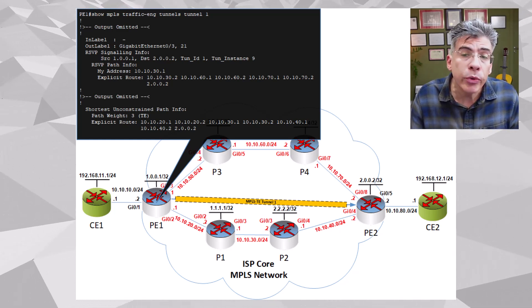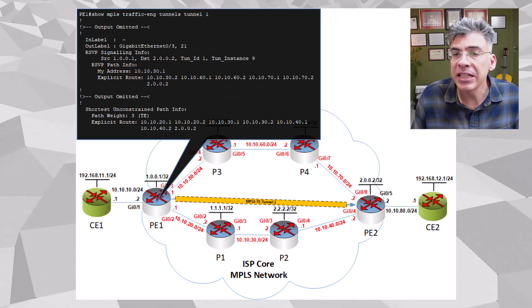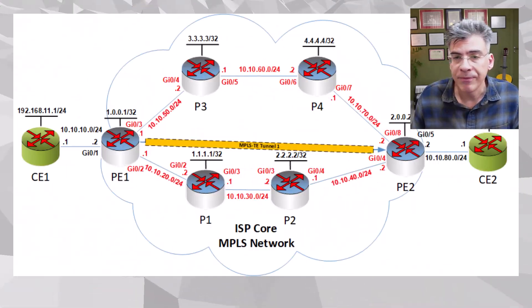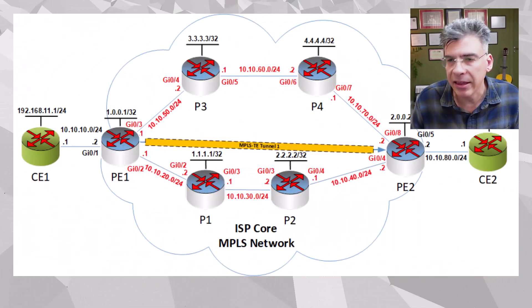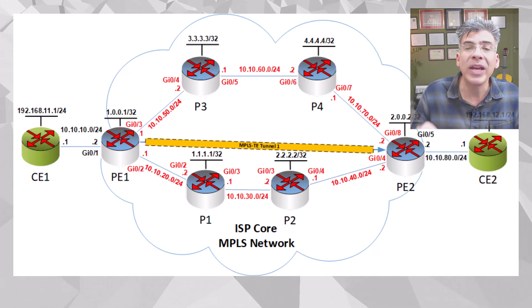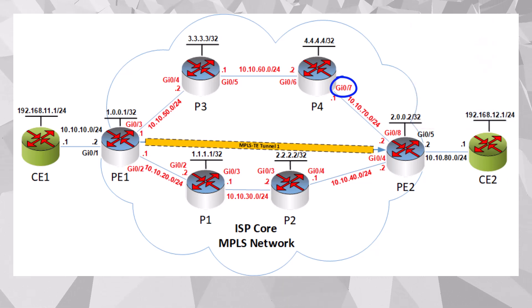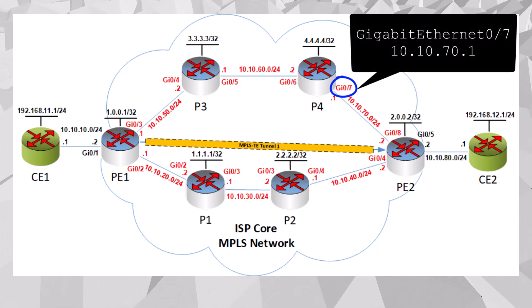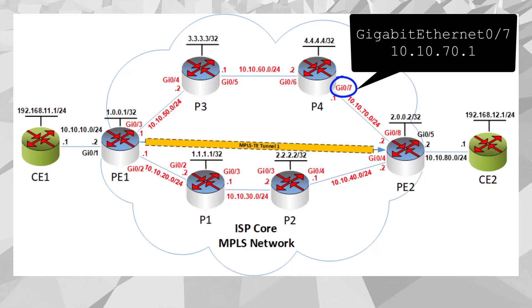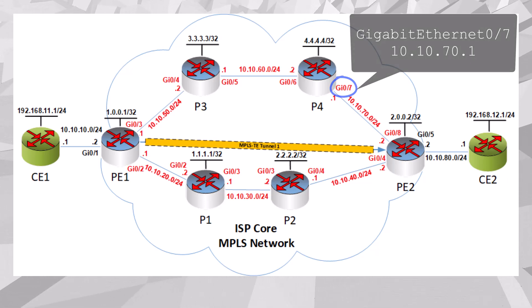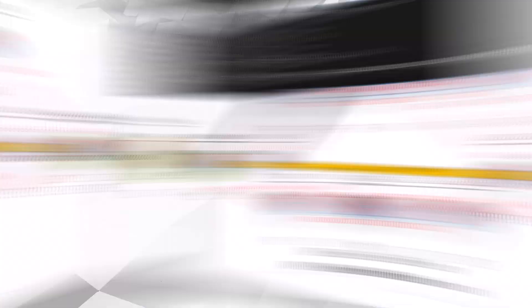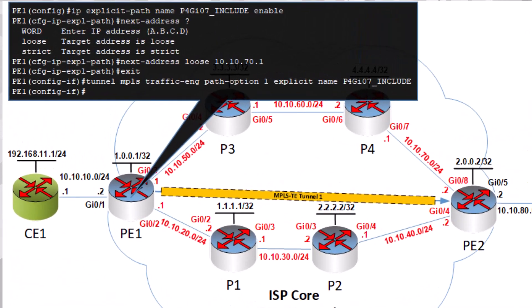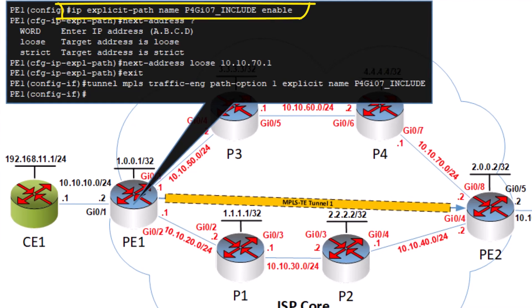Now let's attempt to include a particular interface. Let's first remove our exclusion configuration from our topology, so the tunnel has now returned to its original path. Now let's say that we want to include the GigabitEthernet 0/7 interface of the P4 router here, which has an IP address of 10.10.70.1. To do this, we issue the following commands once again on our headend router PE1. We create our explicit path entity and this time we'll name it P4_GI07_include.